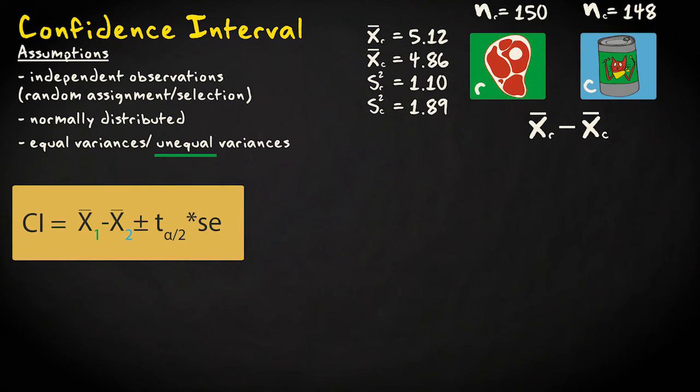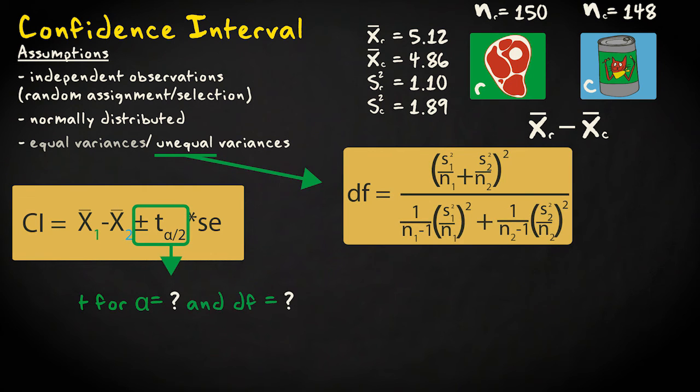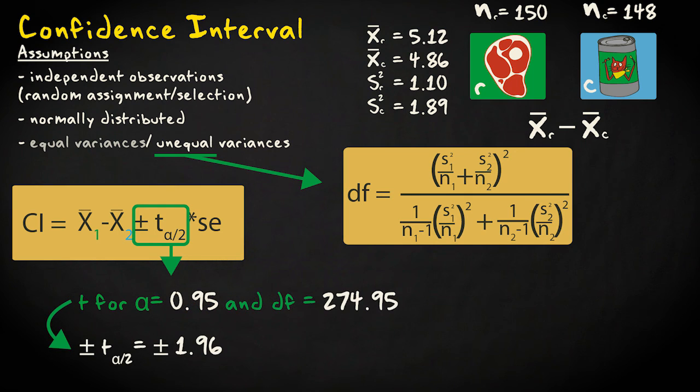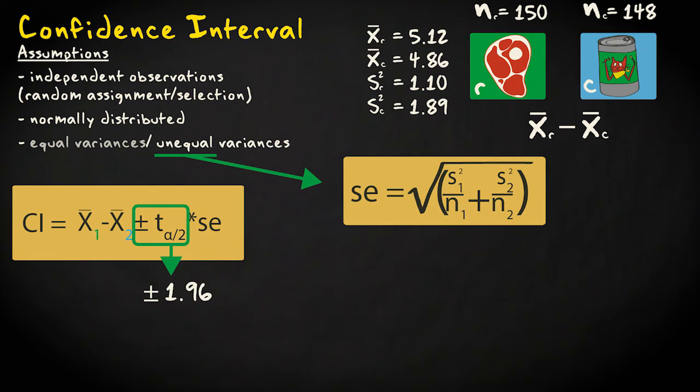We calculate the confidence interval using this formula: the difference in sample means plus and minus t times the standard error. Plus and minus t equals the t values associated with the required confidence level and the degrees of freedom that we just calculated. With 274.95 degrees of freedom and a confidence level of 95%, the values are minus and plus 1.96. The standard error is calculated the same way as before. Also remember that we need to meet the same assumptions required for a two-sided t-test.